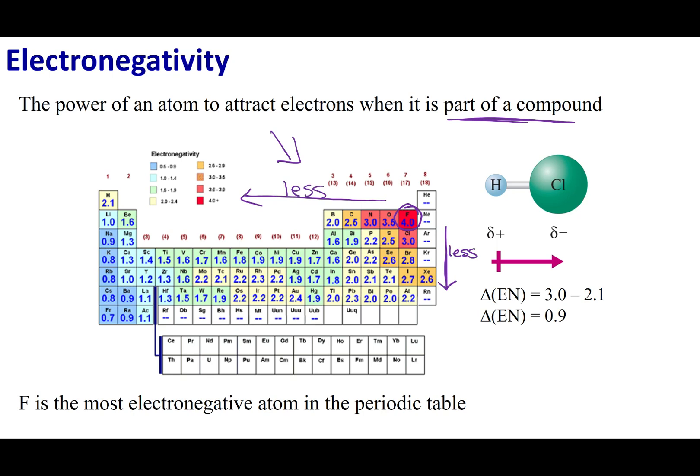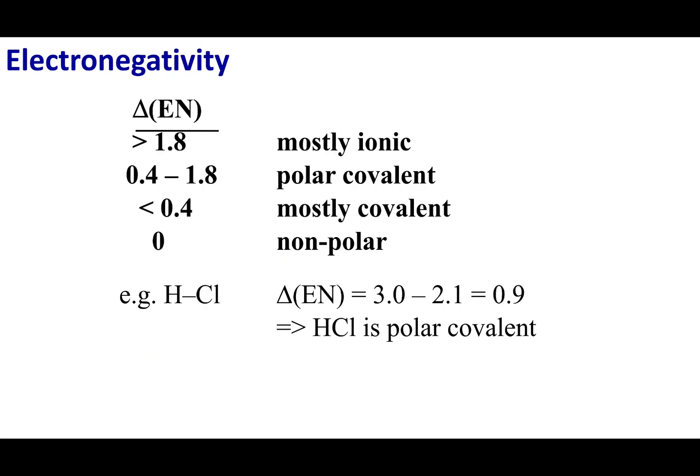We can calculate the difference in electronegativity, so that's going to be delta electronegativity. Go ahead and look up the values of each one of your atoms. In this case, we have chlorine at 3 and hydrogen at 2.1. So the difference in electronegativity is 0.9. In general, when you put compounds together, if the electronegativity is really great, i.e. greater than 1.8, this is probably going to form an ionic bond. If it's between 0.4 and 1.8, these are considered polar covalent. And if it's less than 0.4, we would say it's mostly covalent, meaning it has a very low polarity.